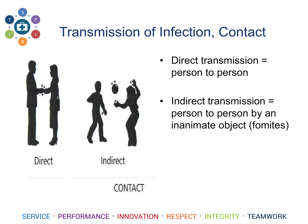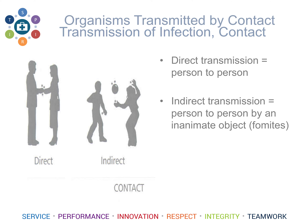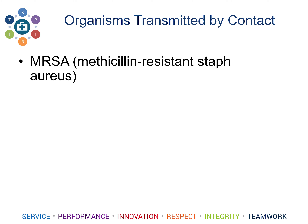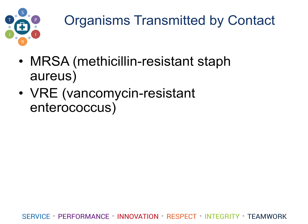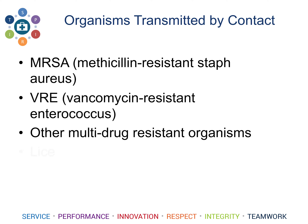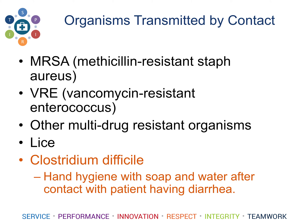Now we will move into the different ways of transmitting disease. One way is through contact precautions — direct transmission from person to person or indirect transmission through an inanimate object such as a fomite, like a TV remote or a computer mouse. Any time a contaminated hand touches those items, you have the potential to transmit disease. Some organisms transmitted by contact precautions are MRSA (methicillin-resistant Staph aureus), VRE (vancomycin-resistant enterococcus), other multidrug-resistant organisms, lice, and Clostridium difficile, or C. diff.